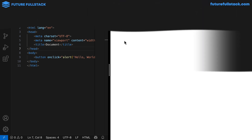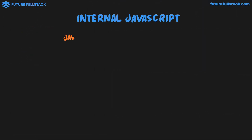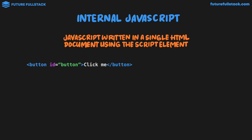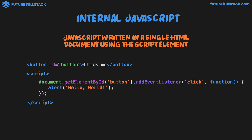The next method for including JavaScript is internal JavaScript. This is JavaScript written in a single HTML document using the script element — not an attribute, but an actual element. We have the same button, give it an ID with the value 'button', then introduce script tags. Inside the script tags we write JavaScript which targets the button and gives us the same alert. I don't want you to worry about the code — just understand that this JavaScript is written internally, inside its own script tags in the HTML document.